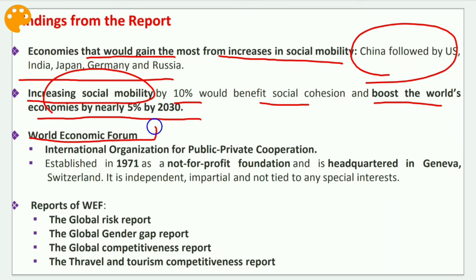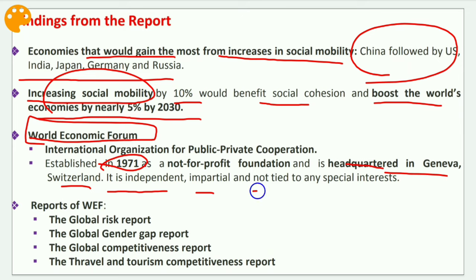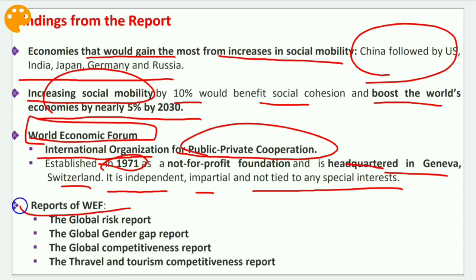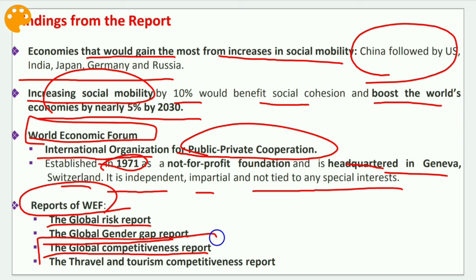The World Economic Forum was established in 1971 and is located in Cologny, a municipality in the cantonment of Geneva, Switzerland. It is independent, impartial, and not tied to any special interests, functioning as an international organization for public-private cooperation. Key reports by WEF include the Global Risk Report, the Global Gender Gap Report, the Global Competitiveness Report — which was asked in previous year prelims — and the Travel and Tourism Competitiveness Report.